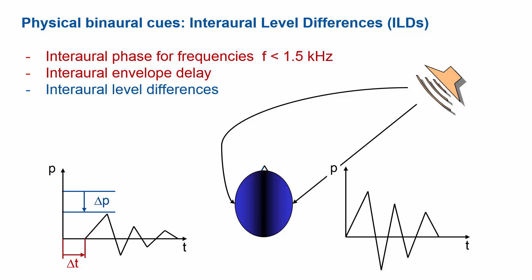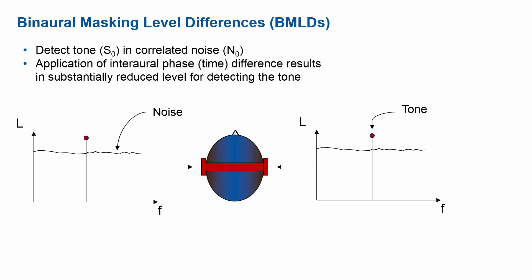Introducing those additional degrees of freedom — those additional cues — into masking experiments makes all the difference for explaining what's going on in the real world. So far we talked about a single tone in noise and measured the masking patterns with one ear. But what happens if we bring the same signal to the other ear? What happens if we introduce a time difference, a level difference, or an uncorrelation into the signal? That's what we're going to look at now.